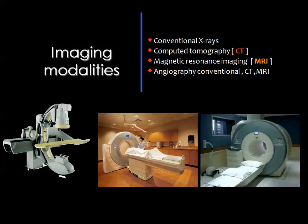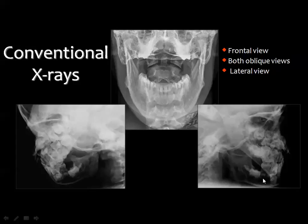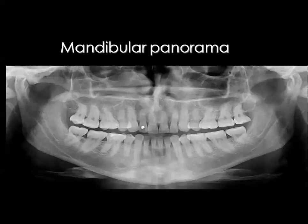There are a lot of imaging techniques for evaluation of the mandible and the jaw in general, including the conventional X-rays with the panoramic view, as well as CT scan, MRI, and some angiographic techniques whether performed by CT or MRI. The traditional way for examination of the mandible was the conventional X-rays, obtained in the frontal view.